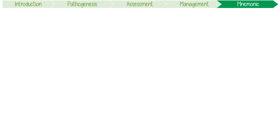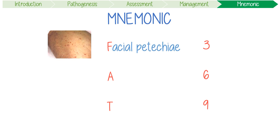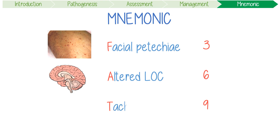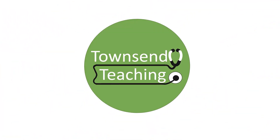Let's recap all of this information with a quick mnemonic: FAT369. Fat embolism syndrome presents with a classic triad of facial petechiae, altered levels of consciousness, and tachypnea due to hypoxemia. 30% of cases get the rash, and this occurs last. 60% of patients get neurological issues. 90% of patients get the tachypnea, and this comes as the first presenting complaint. Thanks for watching Townsend Teaching.